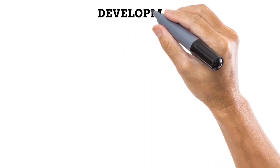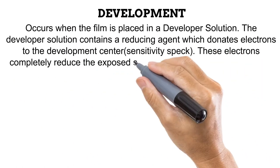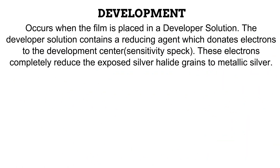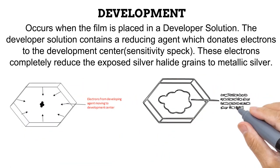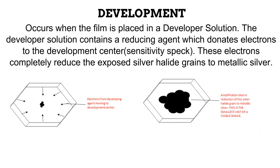We start with development. It occurs when the film is placed in a developer solution. This developer solution has an active ingredient which is a reducing agent. A reducing agent donates electrons to another compound, causing its reduction. In this case, the reducing agent in the developer donates electrons to the development center, thus further reducing the exposed silver halide grains to black metallic silver. Development amplifies this effect such that the clump is much bigger and can be seen by the human eye, producing a visible image.